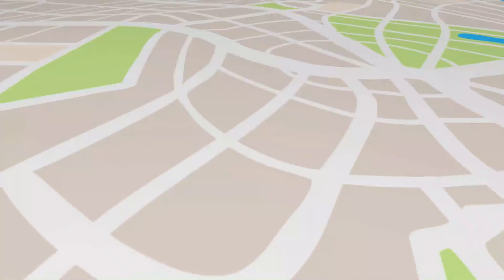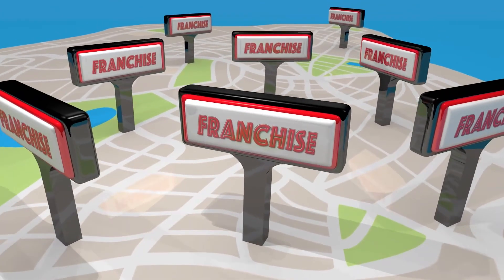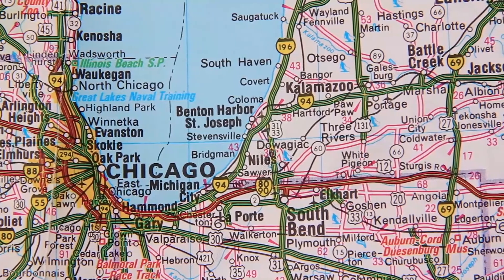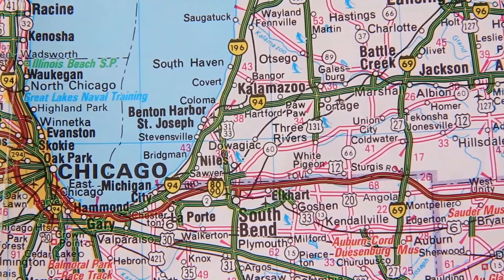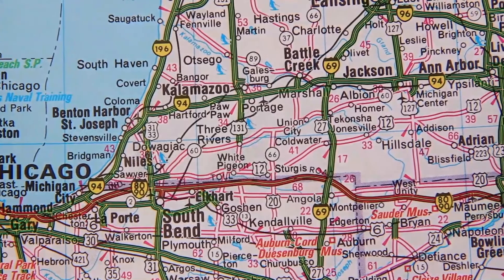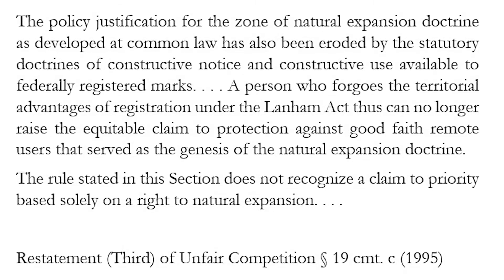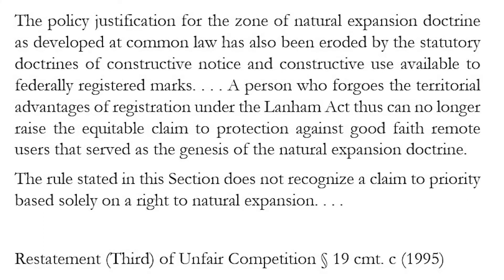Many courts recognize the idea of a zone of natural expansion. If I'm operating in Chicago, it's not going to be surprising if I extend into the northern suburbs or perhaps the westernmost suburbs of Indiana — maybe a natural place to expand. There are some signs that courts are a little more skeptical than they used to be about this idea of a zone of natural expansion.